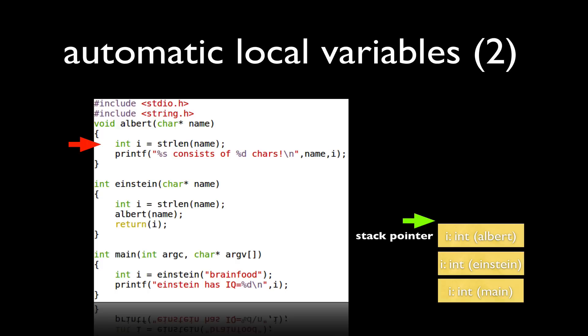They have different scope and they're allocated in different places on the runtime stack. When we return from these functions, the stack pointer is adjusted and that value is no longer available. It's deallocated.